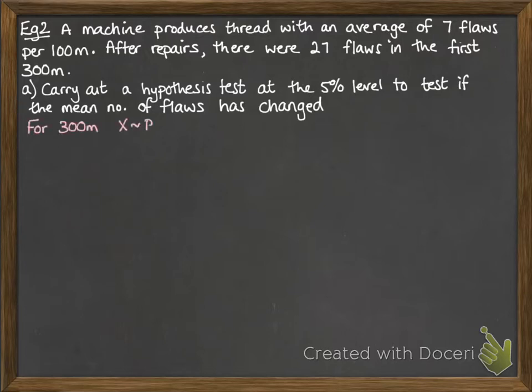So first of all, we need to change it up to a 300 metre length, since that's the test statistic that we have. So our null hypothesis is that the mean will be 21. Since it's 7 in 100, we just times that by 3. So our alternative hypothesis is that the mean has changed, it's no longer 21.